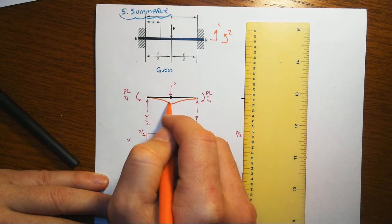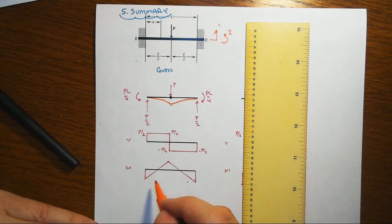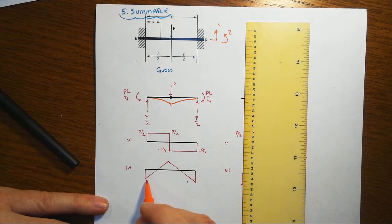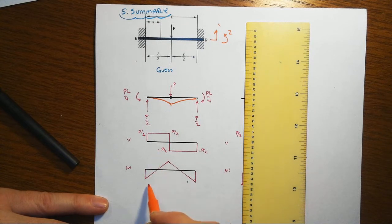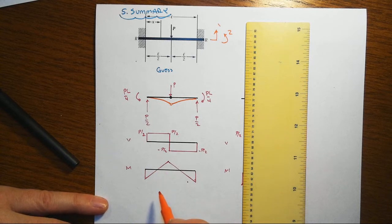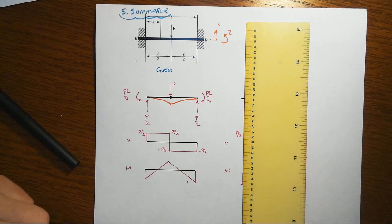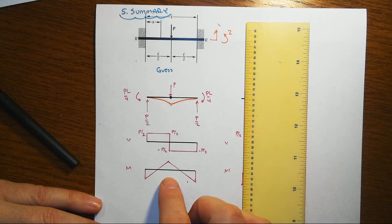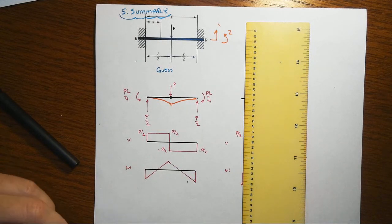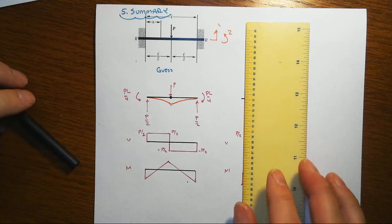That gave us PL over 4, and we said the real moment is going to be less than that. The moment diagram would have gone with a negative PL over 4, shifted downwards with zero at the center, and shifted up somehow. There was a contradiction between the moment diagram we were guessing and what would be consistent with having inserted that hinge.